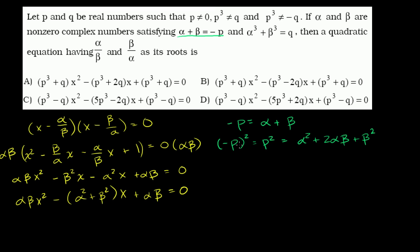Let's just take this to the third power. So negative p to the third, which is the same as the negative of p cubed. Using Pascal's triangle: the coefficients for the cube of a binomial are 1, 3, 3, 1 — there are videos on the binomial theorem covering this.